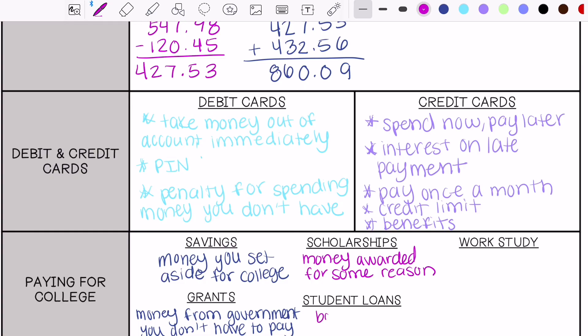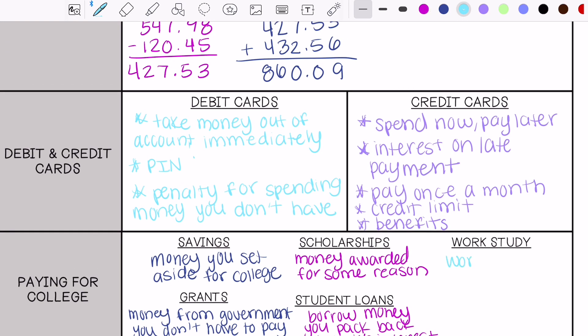Student loans are money that you borrow from the government and you do have to pay back and usually there's interest on top of it. And then work-study is where you work for your university and it helps pay for tuition, books, maybe your place you're staying to live.